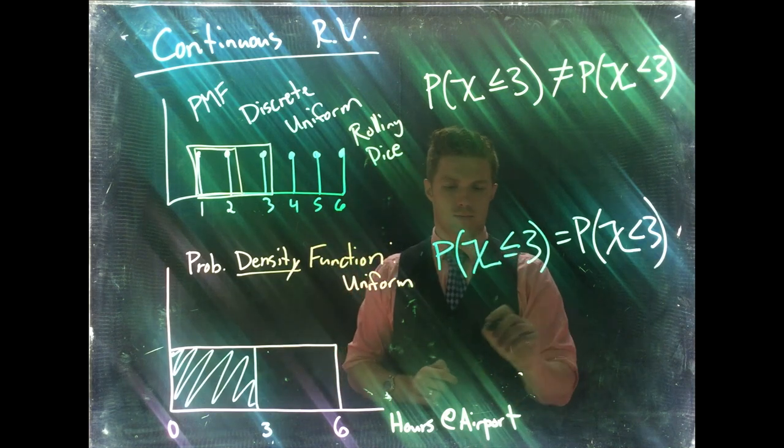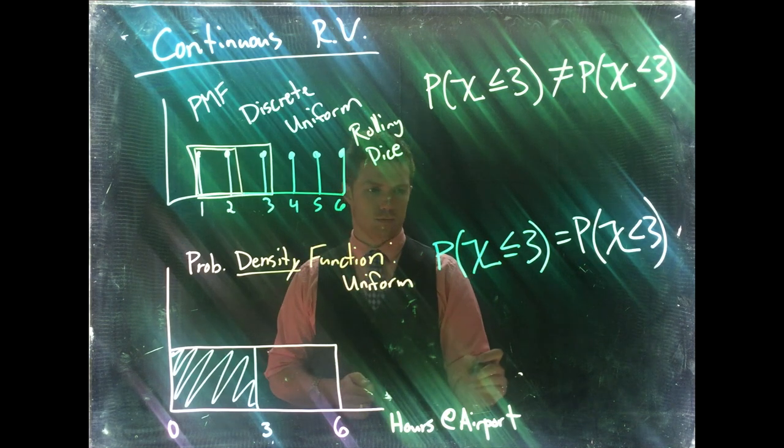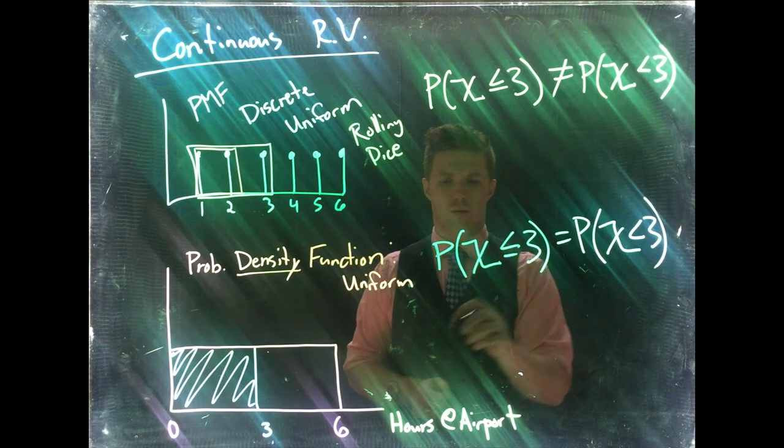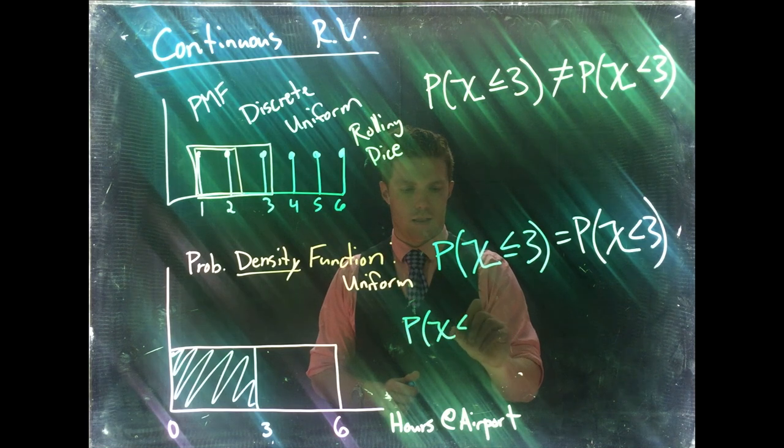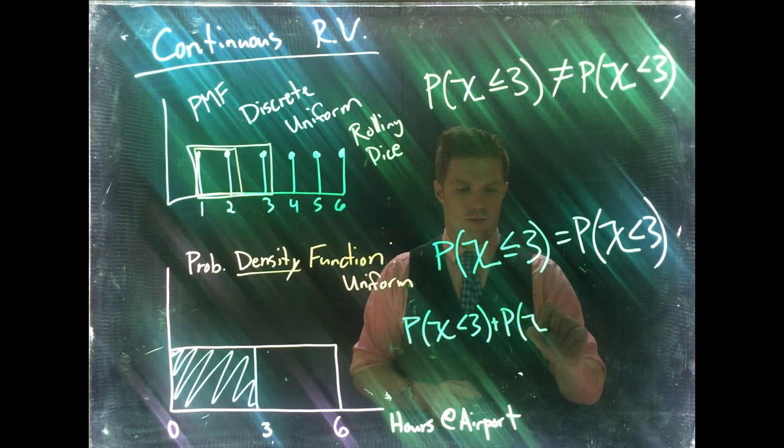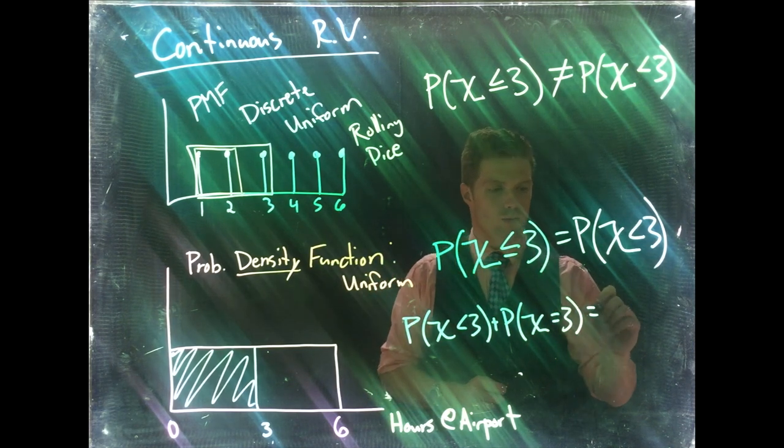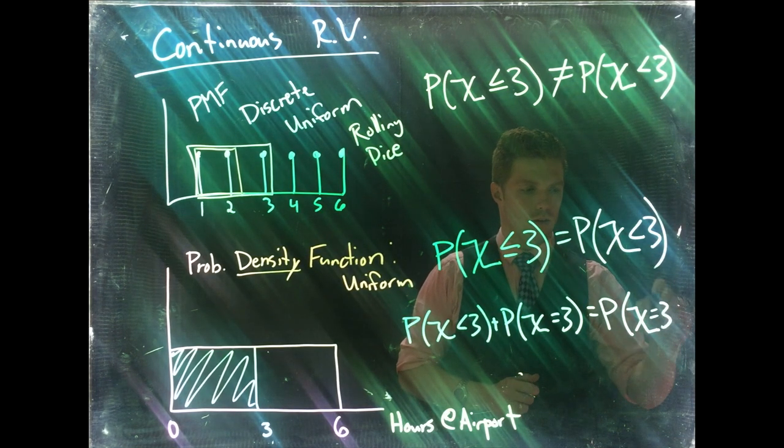So the probability of any specific value. So I'll just say, I'll just show it in an example. So we can rewrite this statement of being less than or equal to three as saying, the probability of being less than three plus the probability of the random variable being equal to three, is equal to the probability of the random variable equaling three.